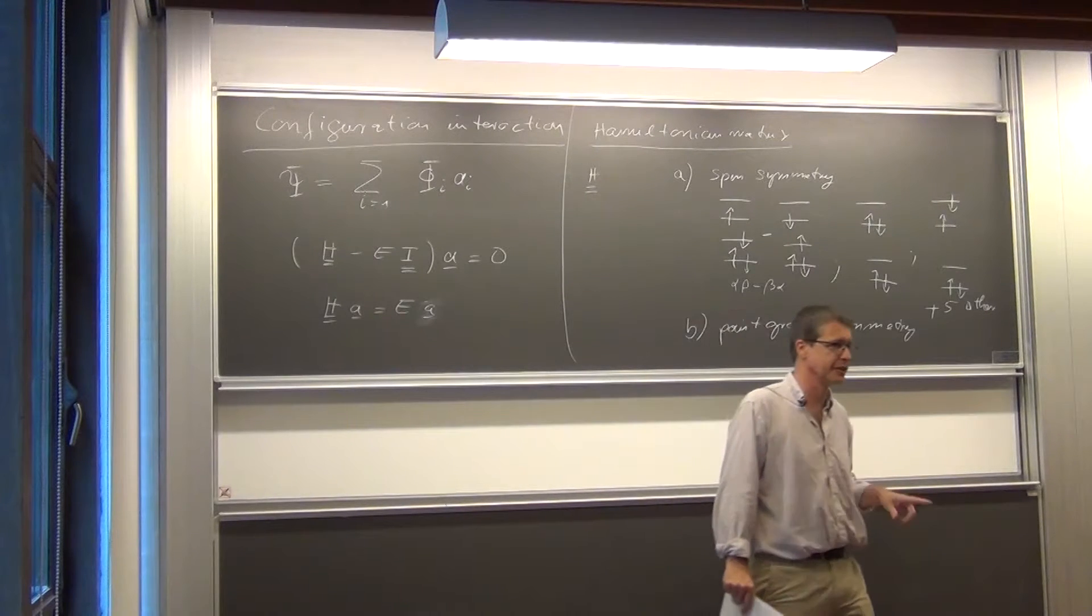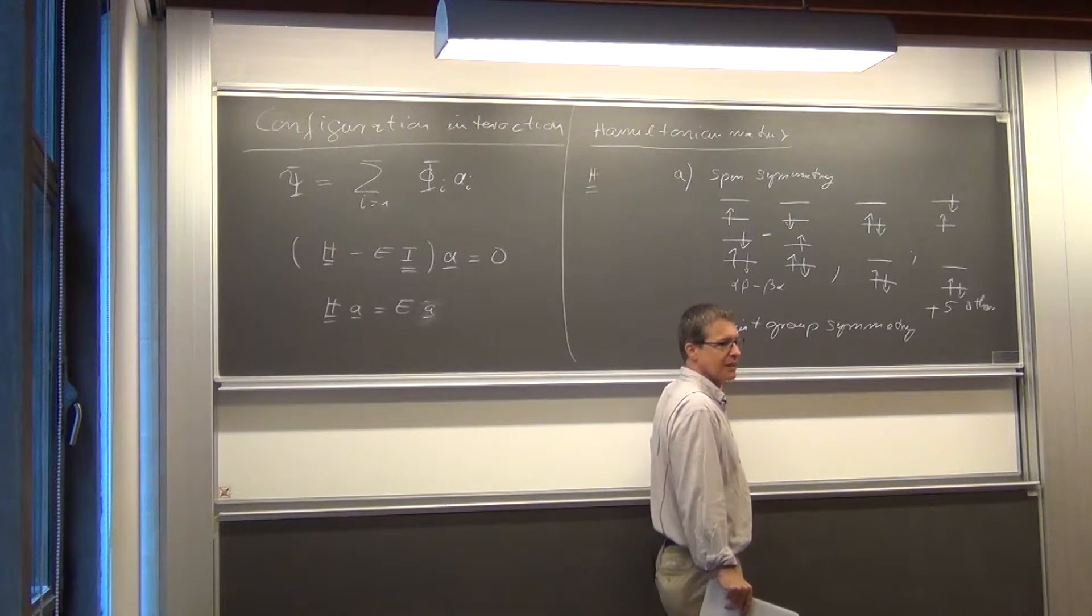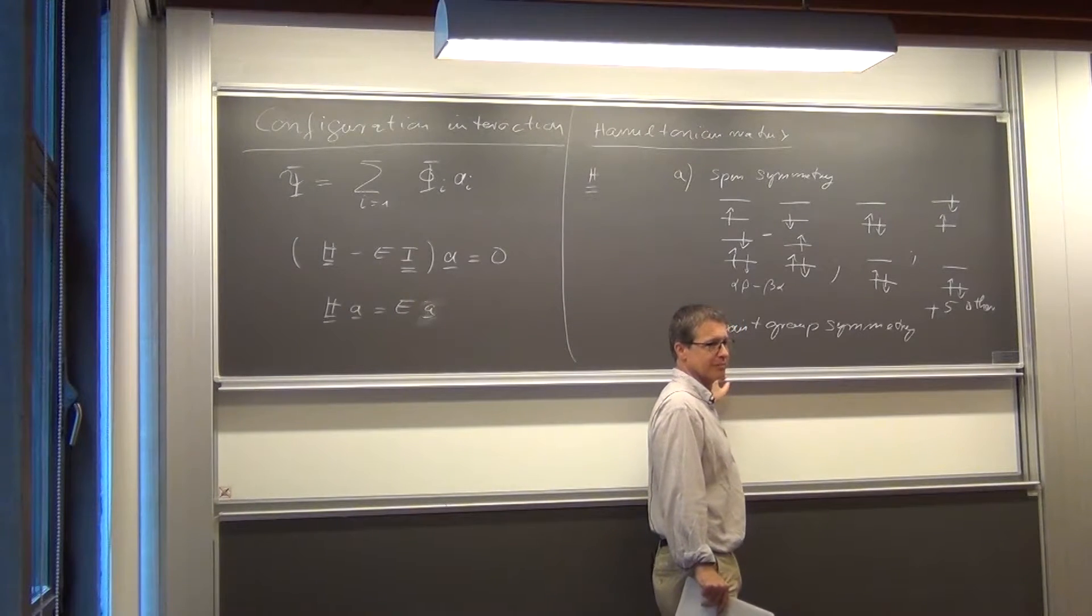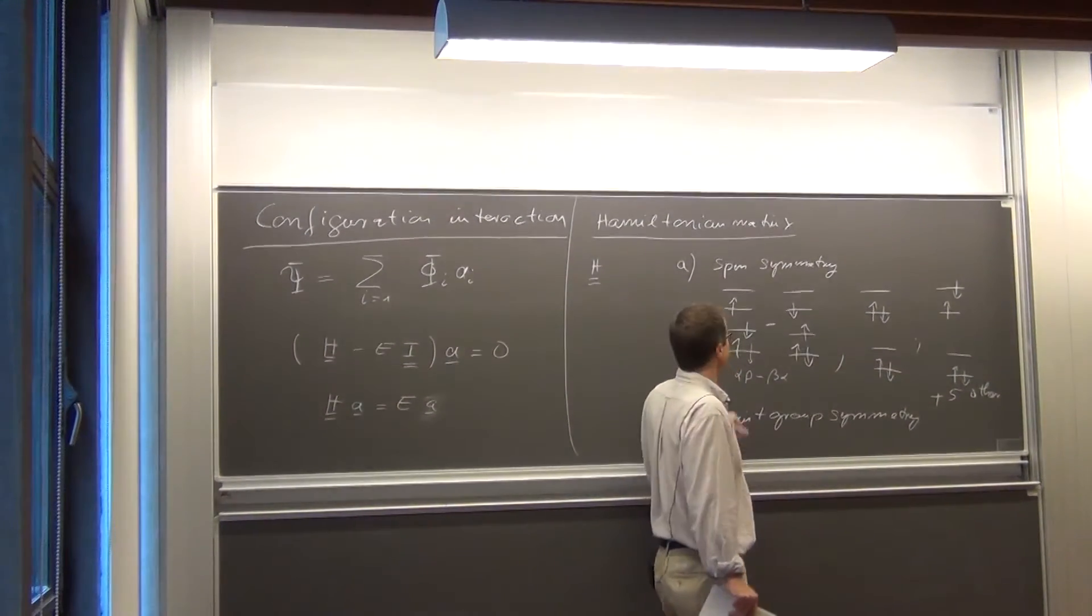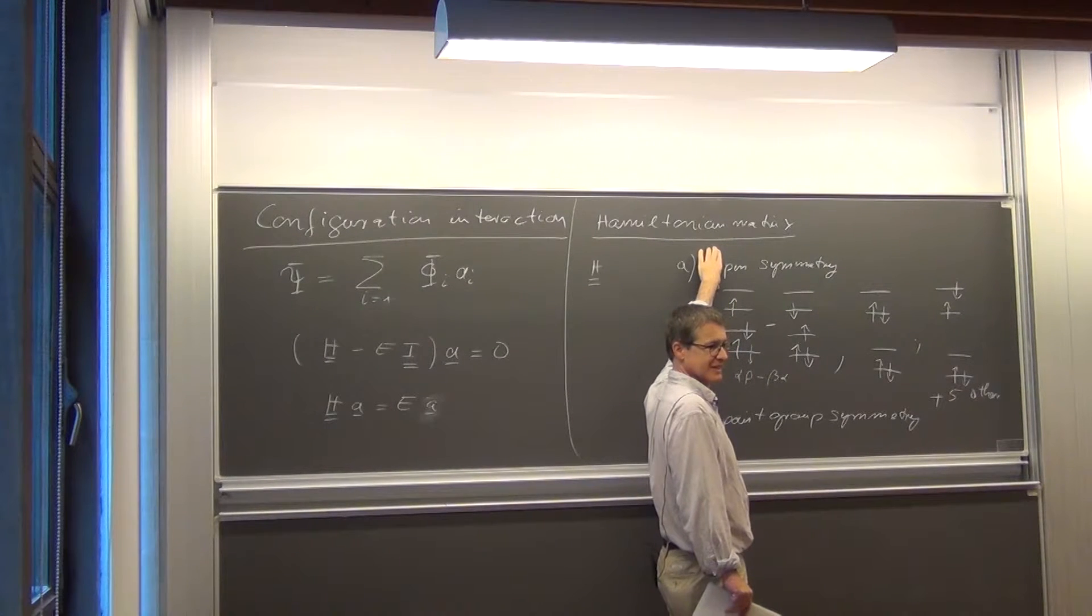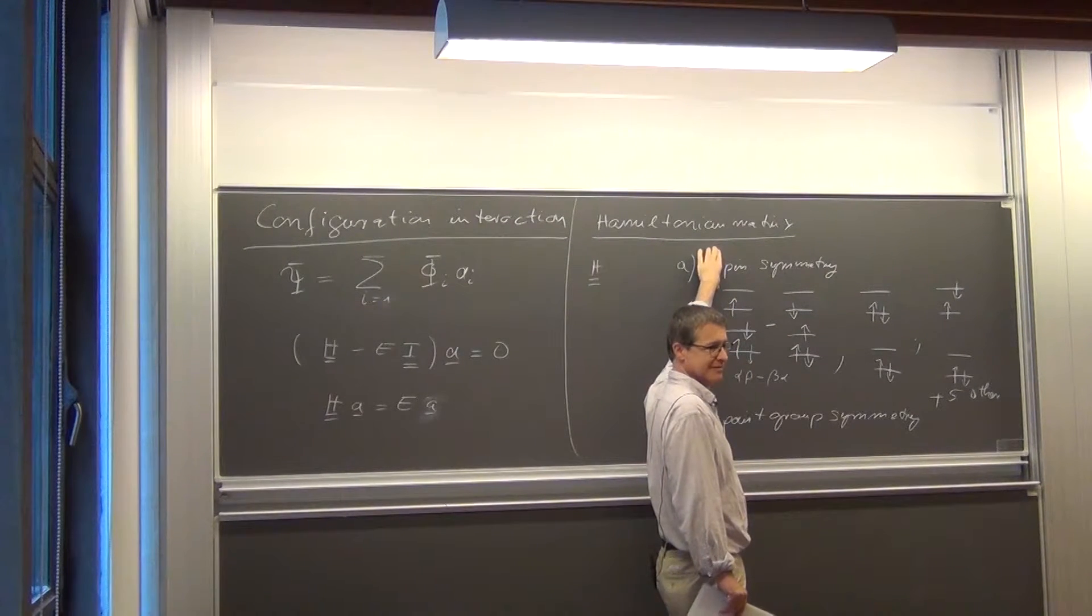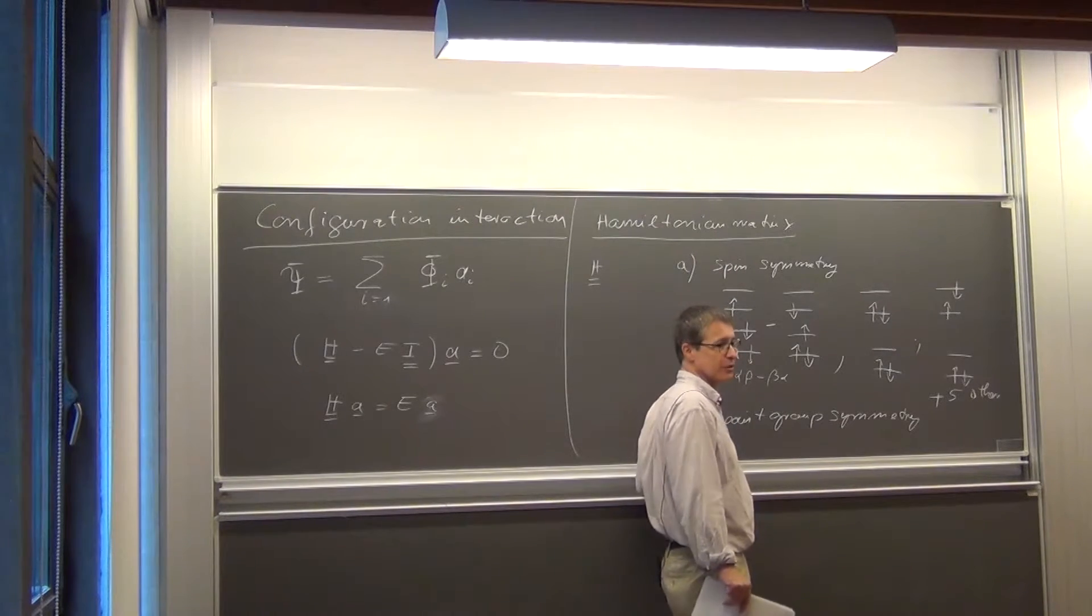And actually this afternoon, when we're going to do calculations, you have to tell the program that. You have to tell the program in the input file what kind of spin symmetry you are aiming for. You also have to tell it the point group symmetry.